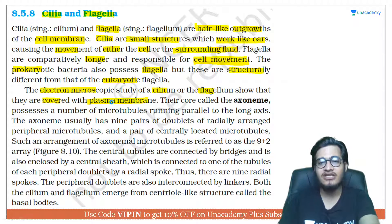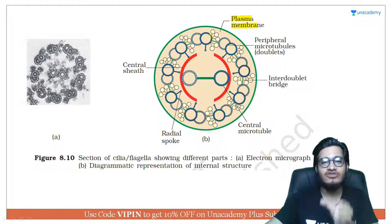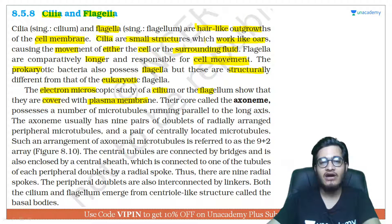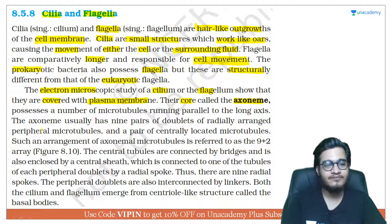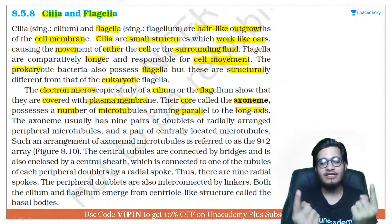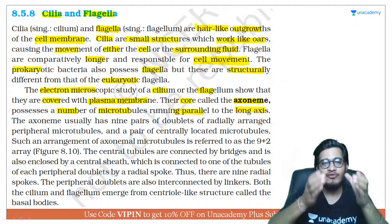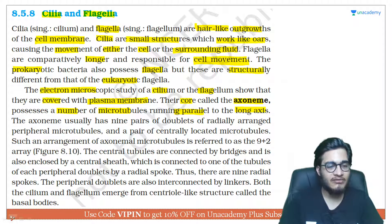Electron microscopic study of cilia and flagella shows that they are covered with a plasma membrane. When you look at their structure, you can see the green-colored structure here is the plasma membrane, which covers and surrounds the entire core of cilia and flagella. This core is called the axoneme. The axoneme possesses a number of microtubules running parallel to the long axis — these microtubules are parallelly arranged in a circular cross-section and are present lengthwise throughout the entire tube.